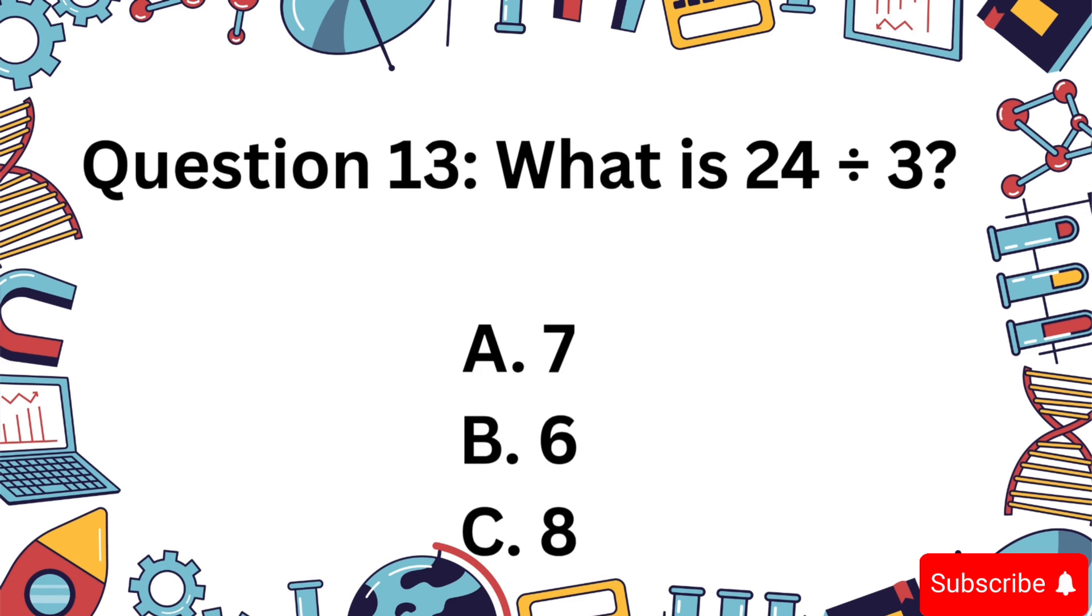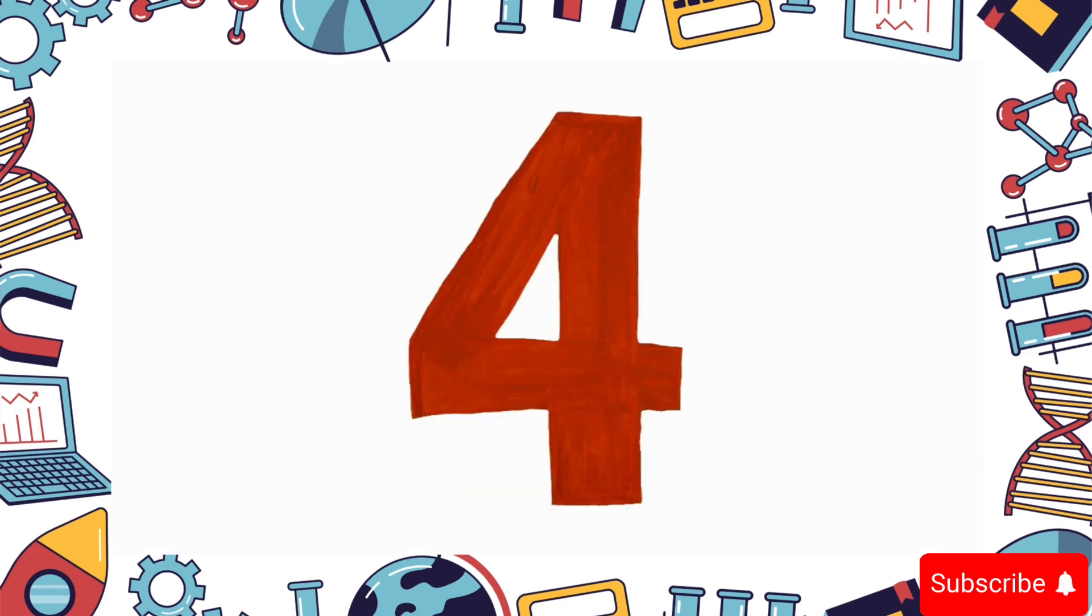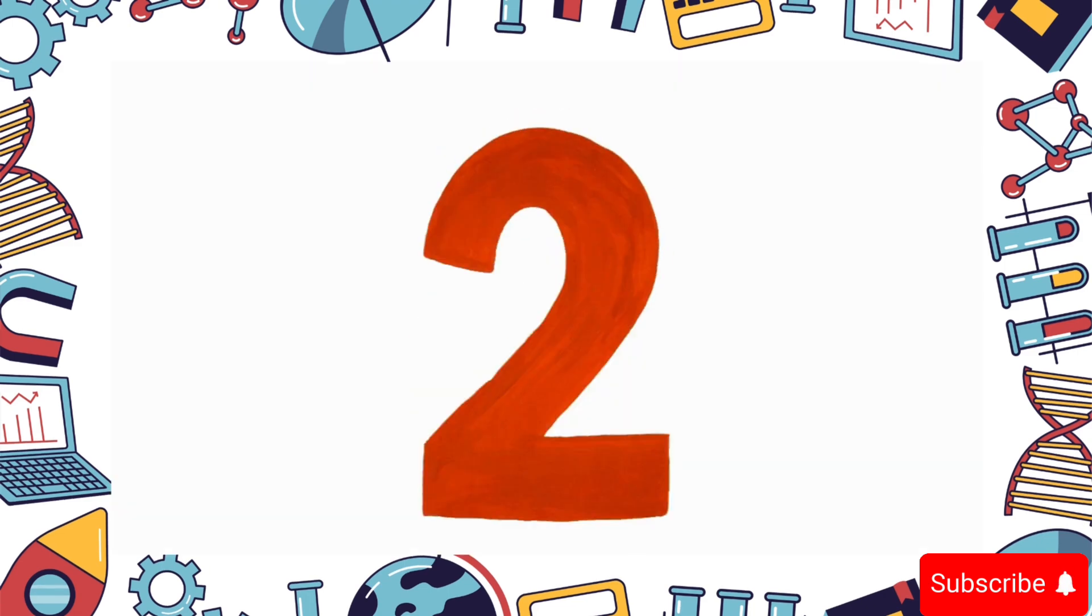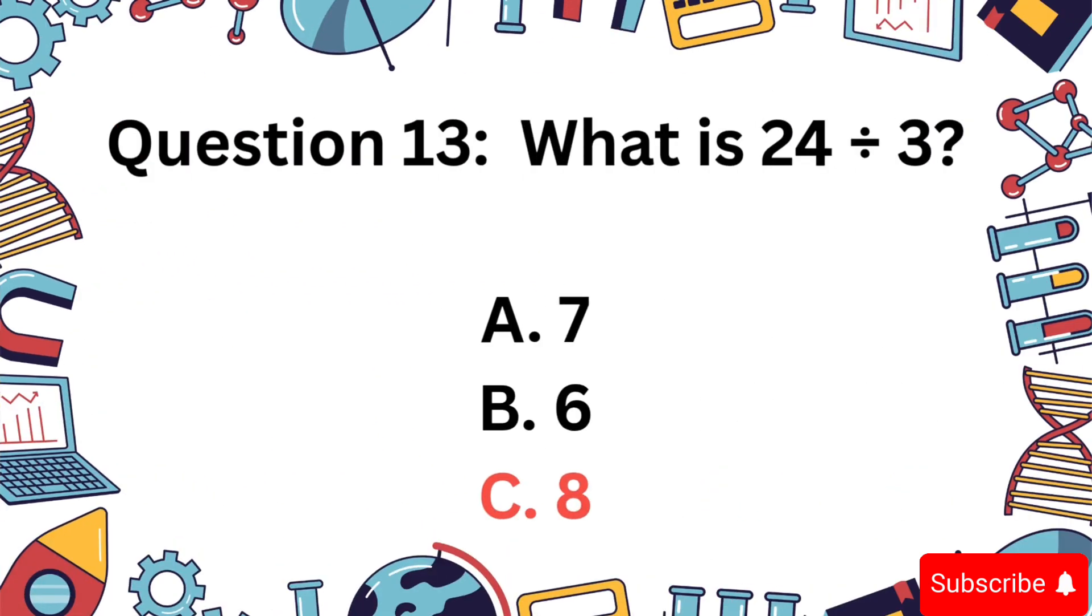24 divided by 3. A, 7, B, 6, or C, 8? The answer is C, 8.